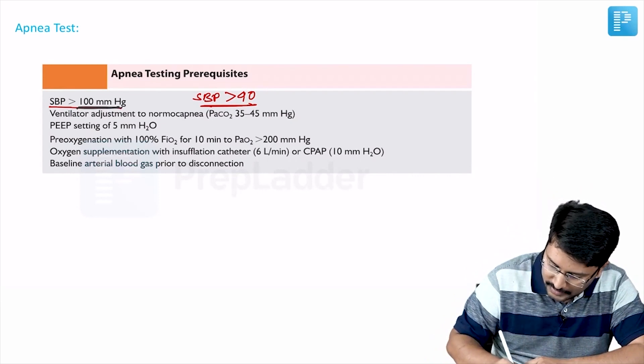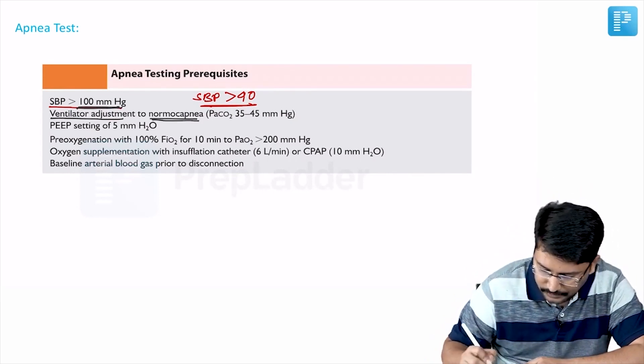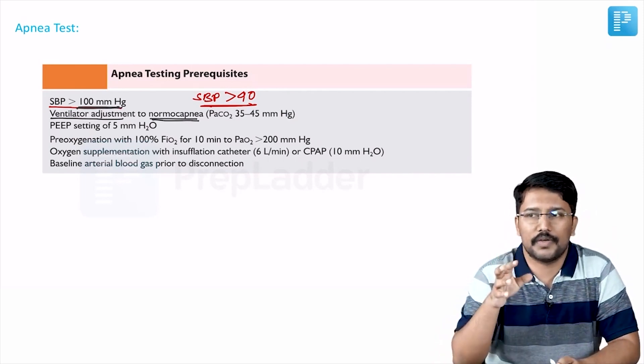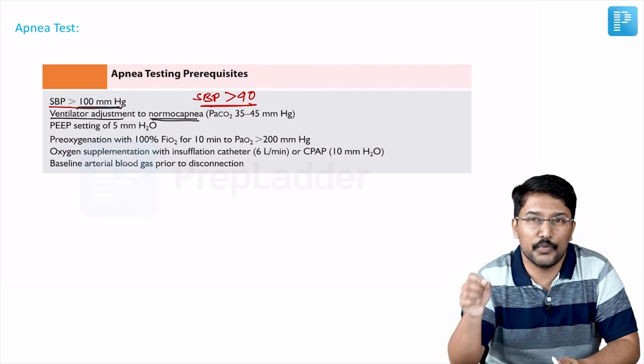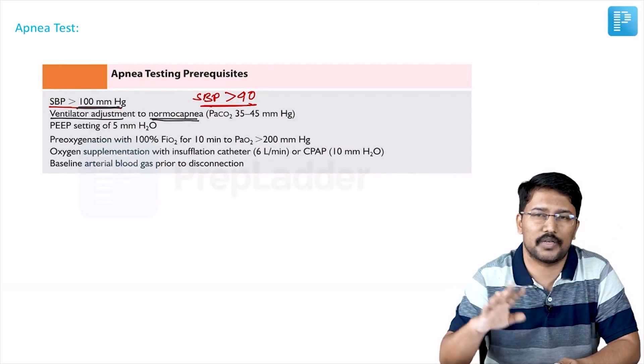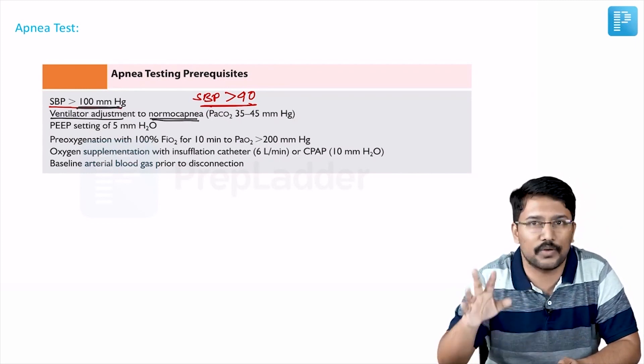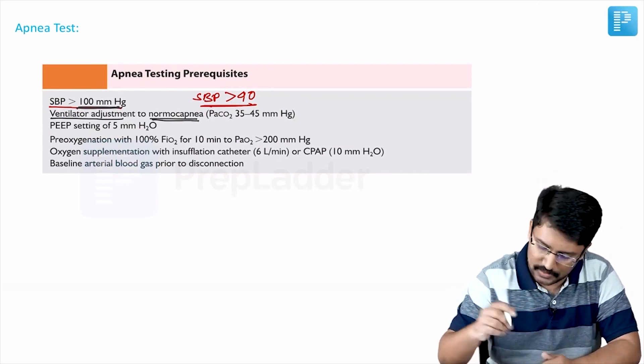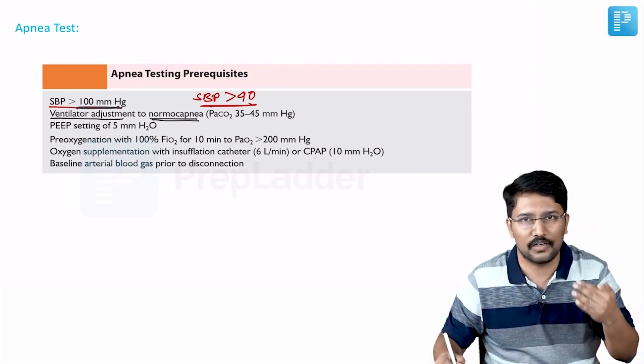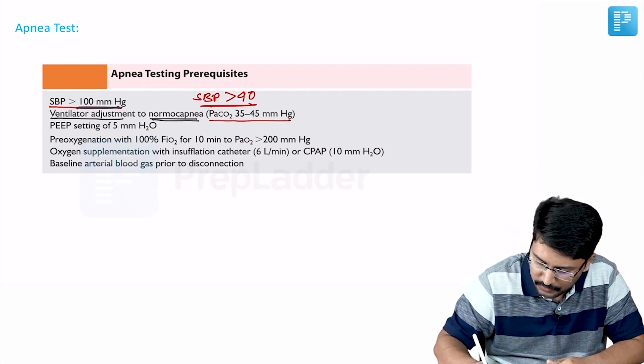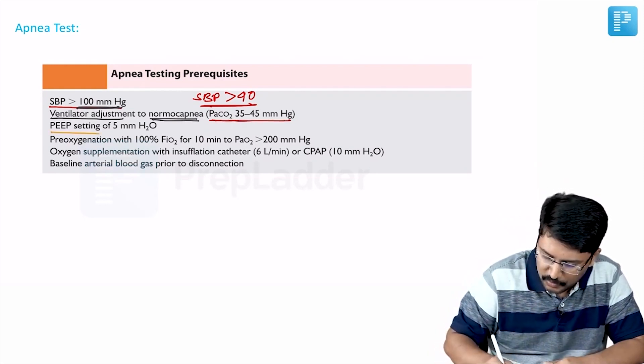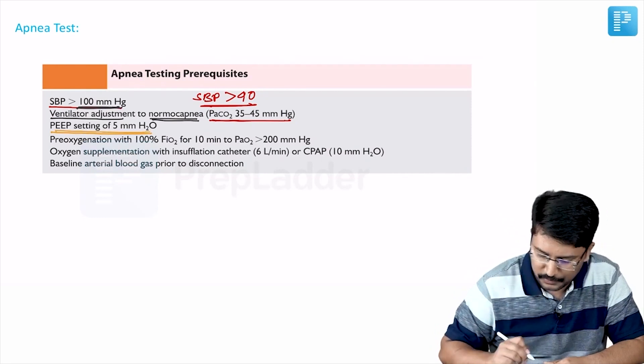Then we should make some ventilatory adjustments so that you have achieved a normal capnea. Because basically in apnea test, we are trying to see whether hypercarbia stimulates respiratory center or not. If hypercarbia is not able to stimulate respiratory center, that means the respiratory center is absolutely dysfunctional. So to get the hypercarbia, we should start with normal capnea. You should have a PaCO2 of 35 to 45 millimeters of mercury. Other things are basic ventilatory settings like PEEP should be around 5 centimeters of water.